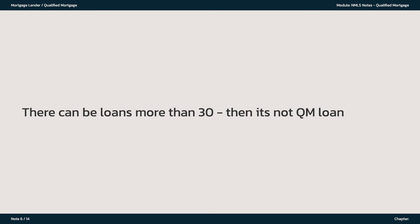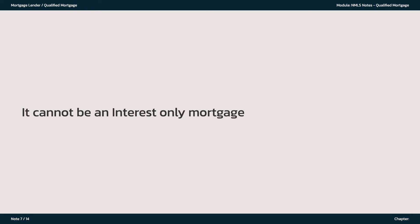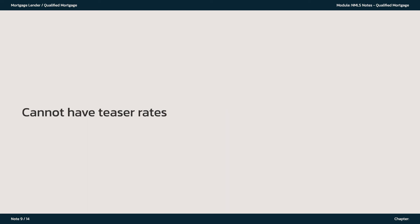There can be loans more than 30 years, but then it's not a QM loan. It cannot be an interest-only mortgage. It cannot be a negative amortization loan. Cannot have teaser rates.